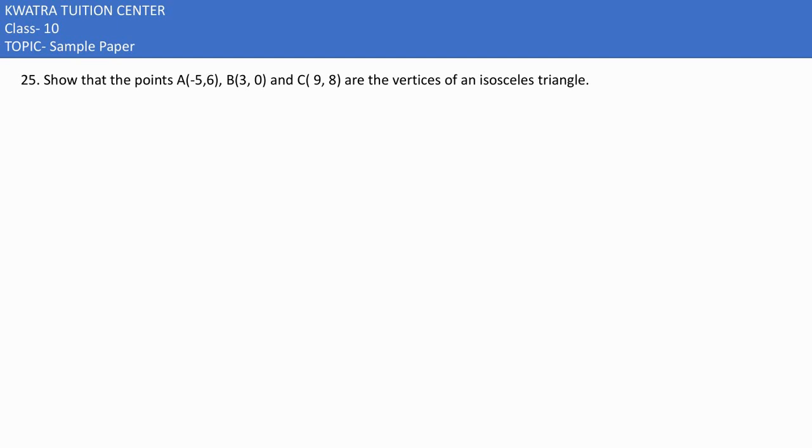Now, the 25th part says show that the points A(-5,6), B(3,0), and C(9,8) are the vertices of an isosceles triangle. So I would be finding AB.